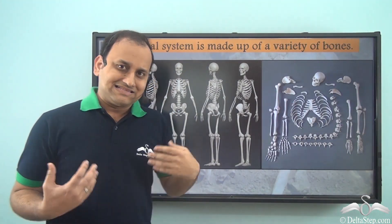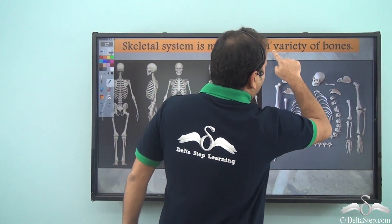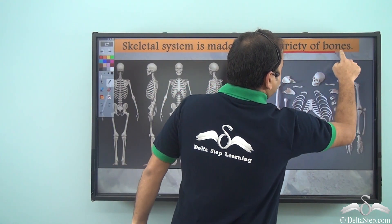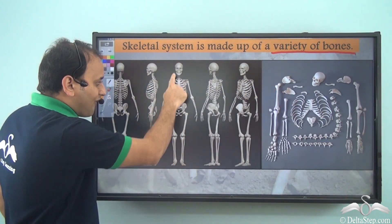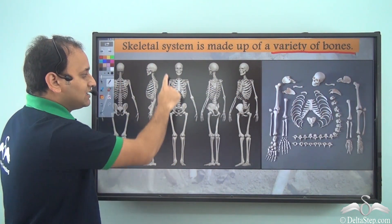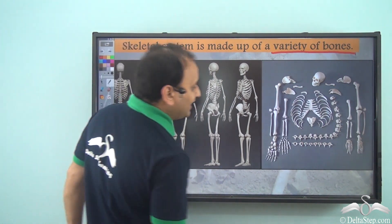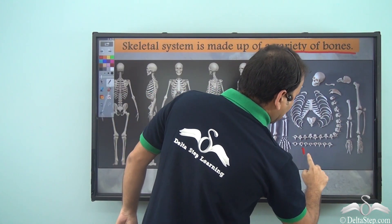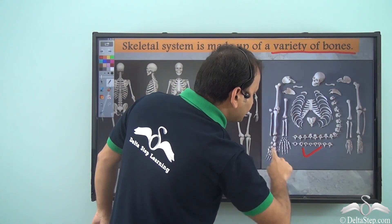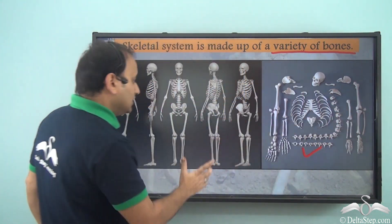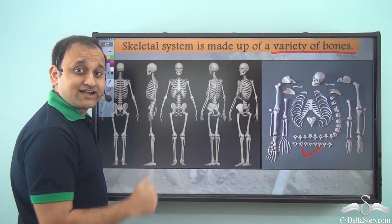Now, the skeletal system is made up of a variety of bones. It's not a single structure or a single bone — there are so many different types of bones, as you can see, and they all together form the skeletal system, or the skeleton.